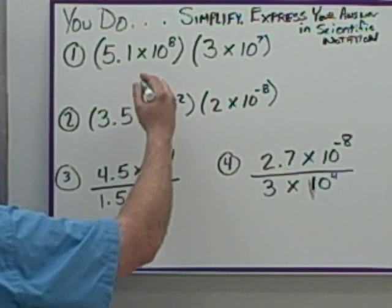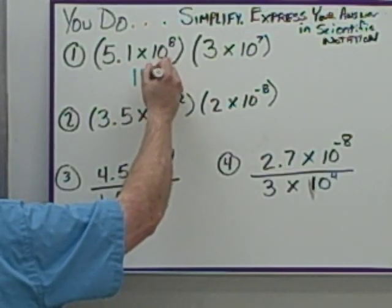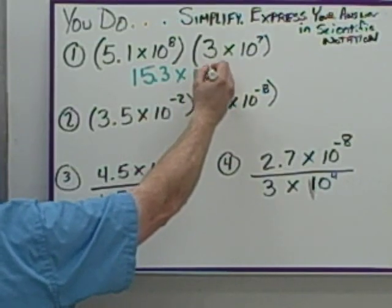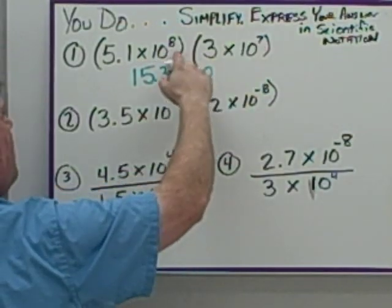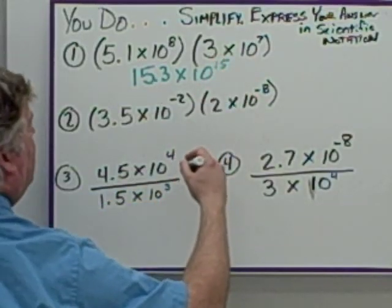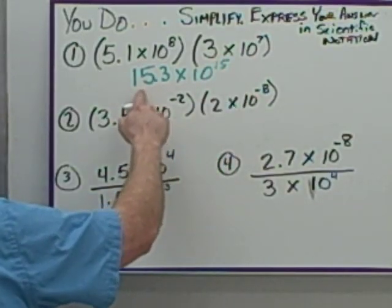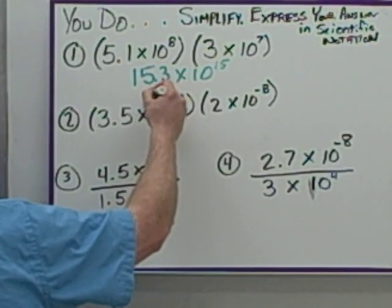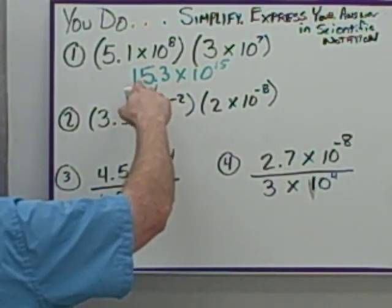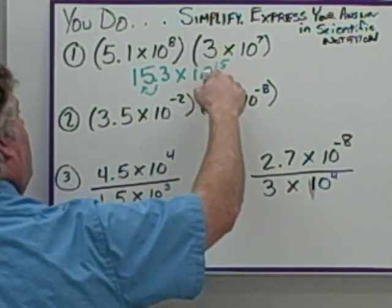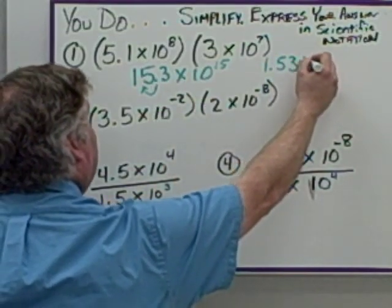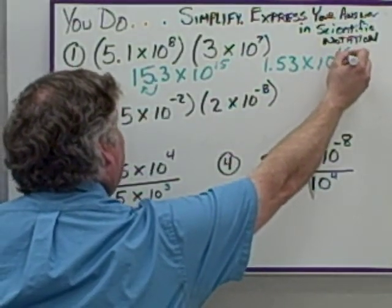This one we're going to do 3 times 5.1, which is going to give you 15.3. We're going to be writing that as times 10 to the something, which would be the sum of these exponents. 8 plus 7 is 15. This is not. This is greater than 10, so I've got to adjust it by moving it over one place value. One place value making it smaller here means I've got to make it larger here, which becomes 1.53 times 10 to the 16.